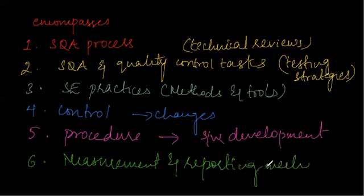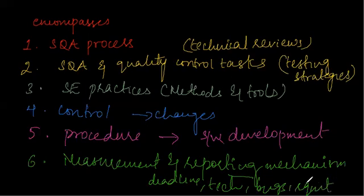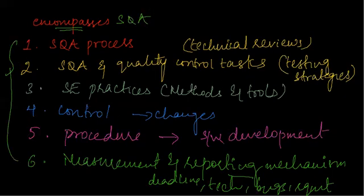Measurement tracks the work you have been doing, while the reporting mechanism covers situations where you are falling short of deadlines, unable to reach deadlines in time, there are unresolved bugs or errors, or requirements are not implemented the way the user wants. These are the six things that software quality assurance encompasses.